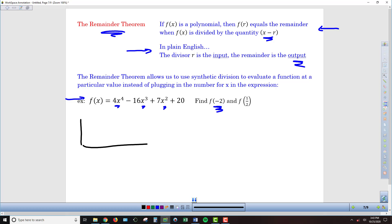If I set up my synthetic division box, my divisor is going to be the input number here, so that's going to be negative 2. And then inside the box are going to be the coefficients of our polynomial here. So we're going to have 4, negative 16, 7. Now notice the x term is missing, so I do need to have a placeholder for that. And then 20.